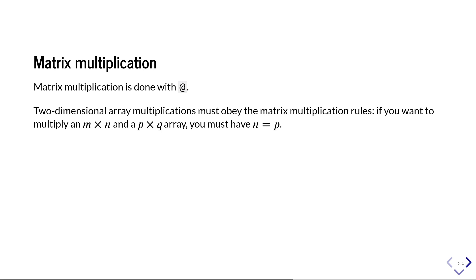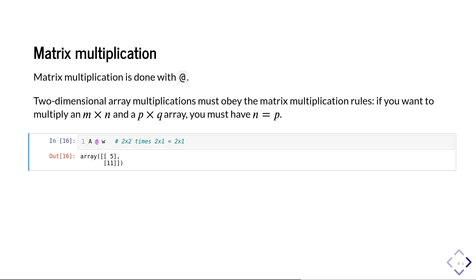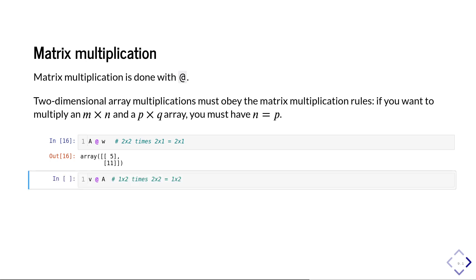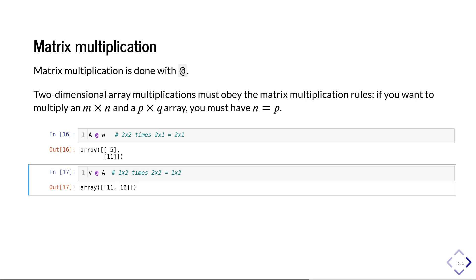Let's see some examples. Recall that w was a 2 by 1 column vector and A was a 2 by 2 matrix. So A @ w makes sense as a matrix multiplication and the result is another 2 by 1 column vector — and indeed that's what we get. Also, v was a 1 by 2 row vector and A is a 2 by 2 matrix, so v @ A is a legitimate multiplication yielding another 1 by 2 row vector.